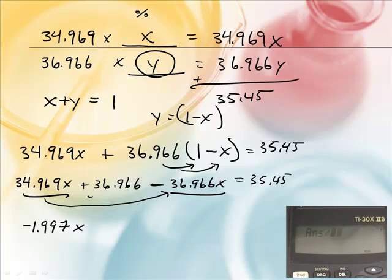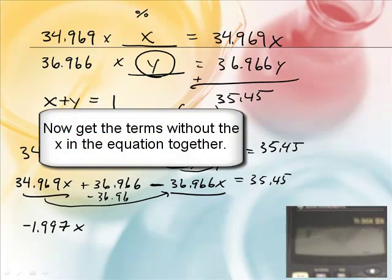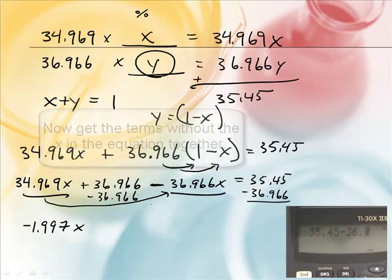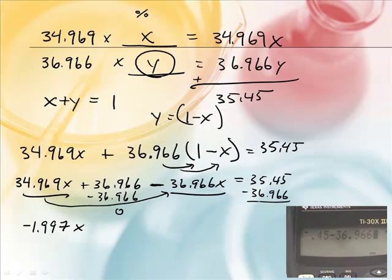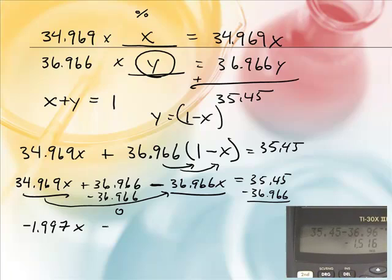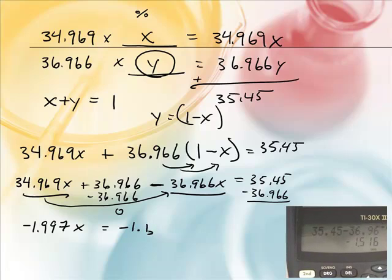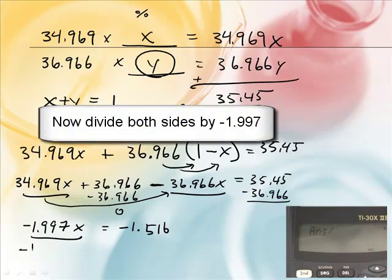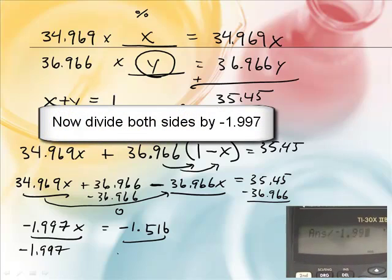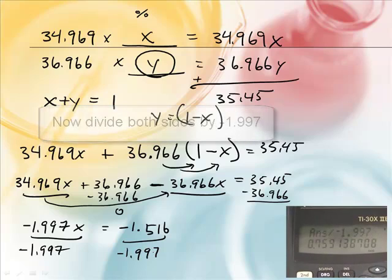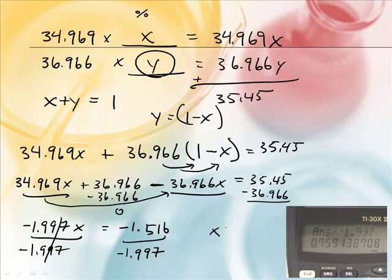Now, if I subtract 36.966 from both sides, what do you get? This, of course, adds up to a zero. This adds up to another negative number, negative one maybe or something like that. We get negative 1.516. So, that would be equal to negative 1.516. Now, how do we solve for x? Divide both sides by negative 1.997. These cancel. Yep. X equals what? 0.7591.